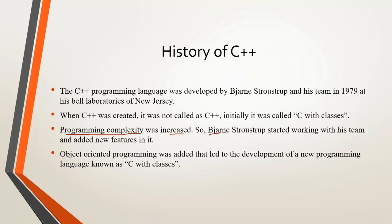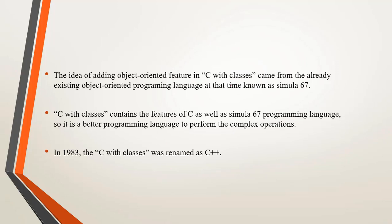The most important feature added was object oriented programming, which led to the development of a new language known as C with classes. The idea of adding object oriented features came from an already existing object oriented language known as Simula 67. C with classes combined features of both C and Simula, making it better for performing complex operations. In 1983, C with classes was renamed as C++.